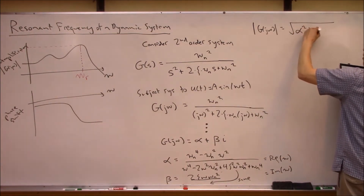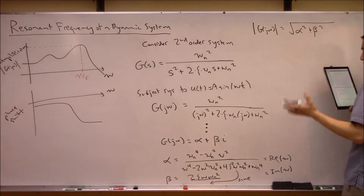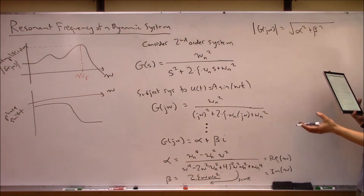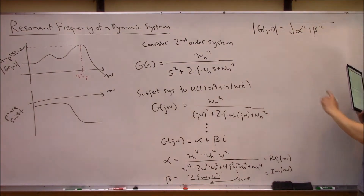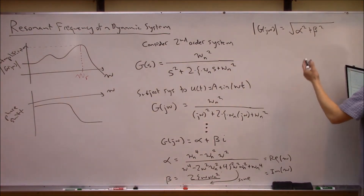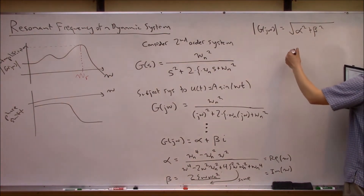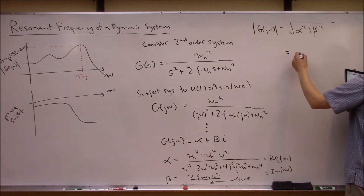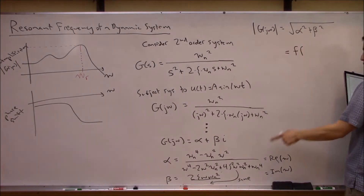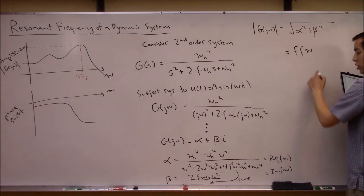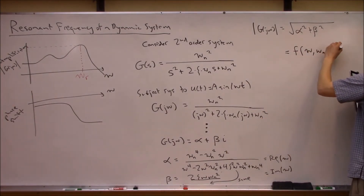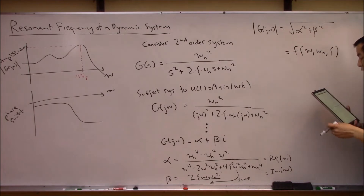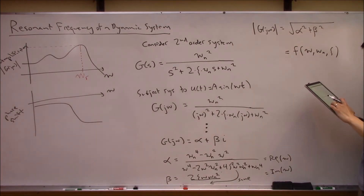The magnitude of G(jω) is the magnitude of the complex number α + jβ, which is just √(α² + β²). This gets ugly, so I'm going to jump over to Mathematica — we'll see that this is a function of ω, ω_n, and ζ.